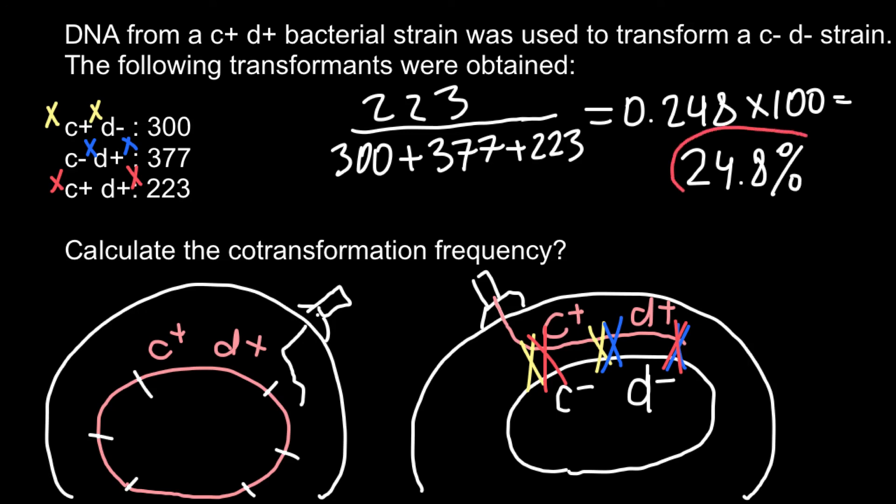And this is going to be the co-transformation frequency of the gene C and D that are represented in our problem by alleles C-positive and D-positive.